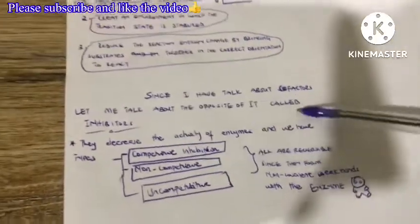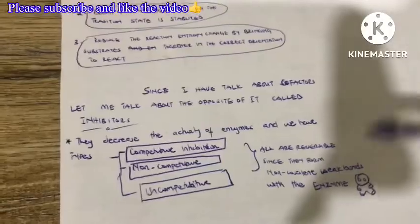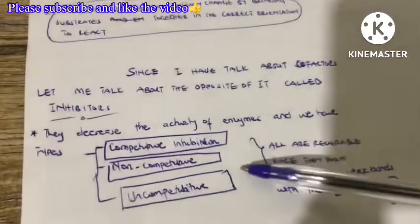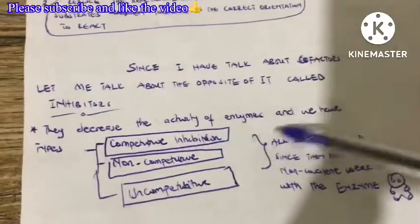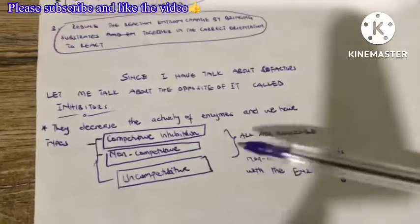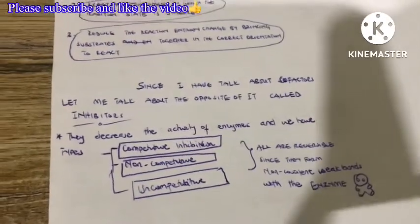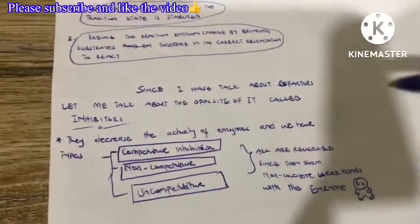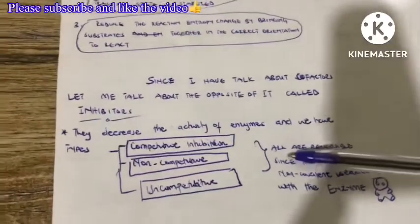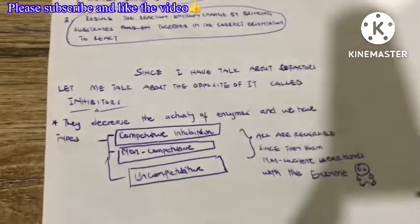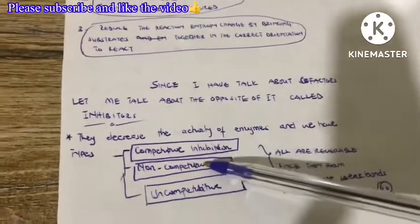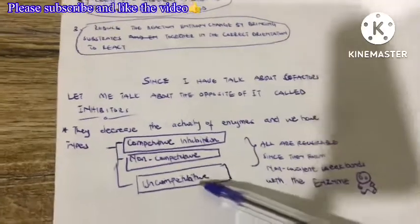Now let's look at the opposite of cofactors, which is inhibitors. Inhibitors decrease the activity of enzymes. We have two main types: reversible inhibitors and irreversible inhibitors. For the reversible inhibitors, we have three main types: competitive inhibition, non-competitive inhibition, and uncompetitive inhibition.